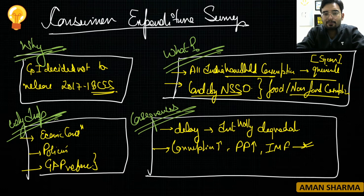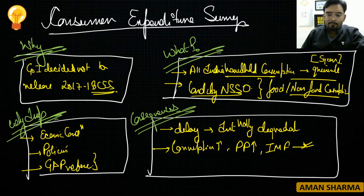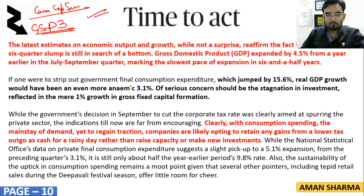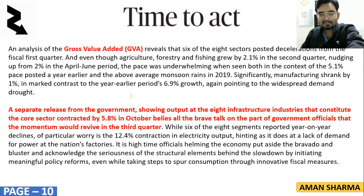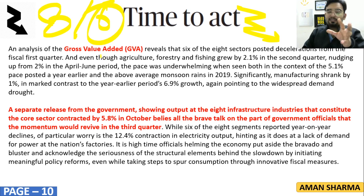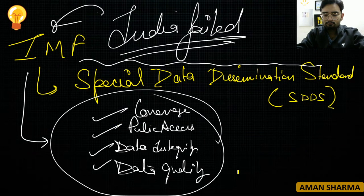The article's summary is: what is the Consumer Expenditure Survey, why India is failing to release it, and additionally, India's GDP has been slowing down significantly — it is at 4.5%. Out of 8 core sectors, 6 have shown degradation (except fertilizer and refinery products). India needs to boost consumption, and viable fiscal measures are needed.